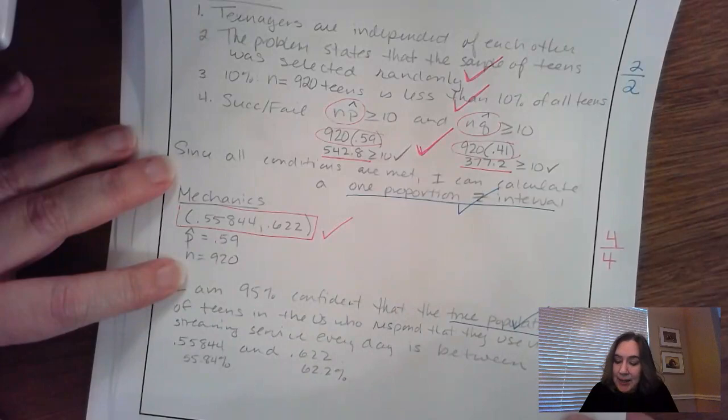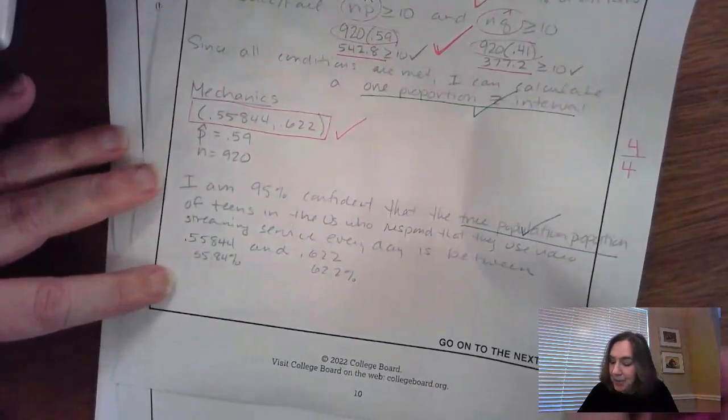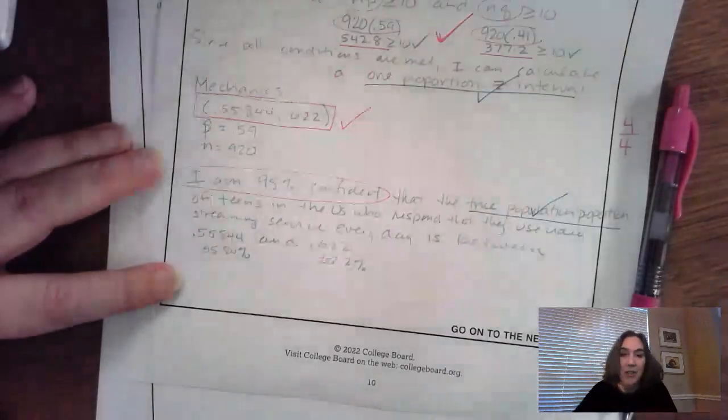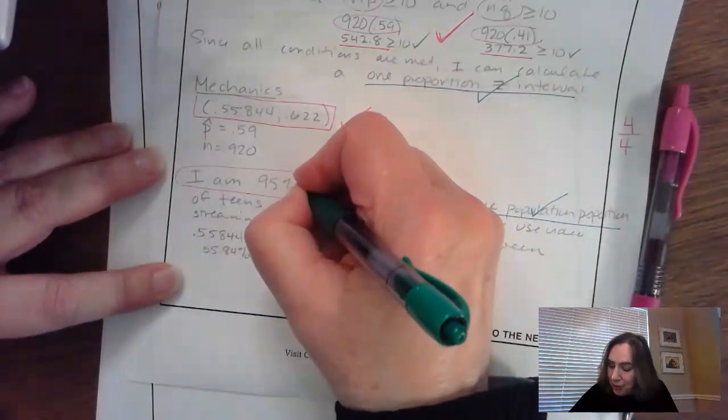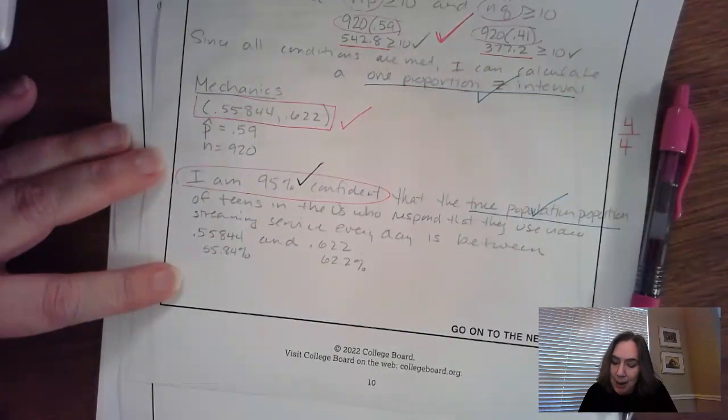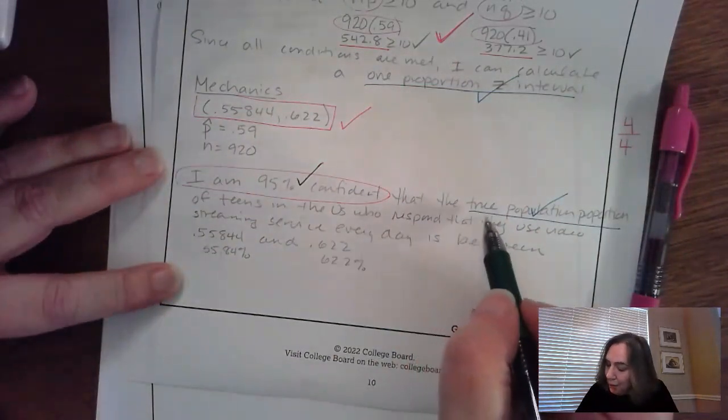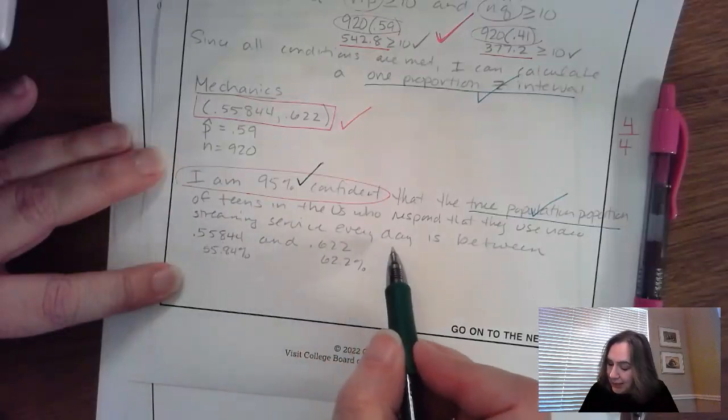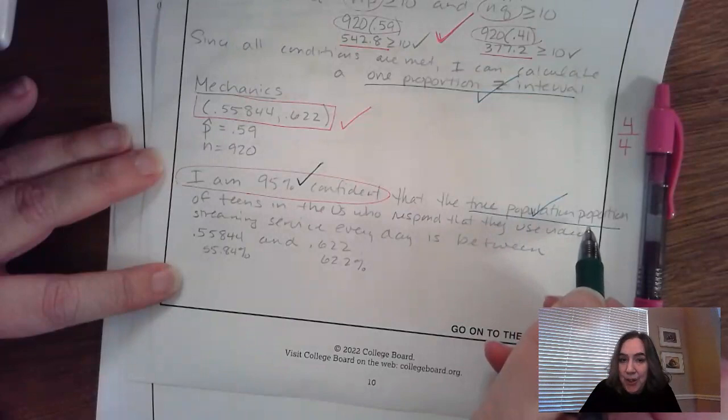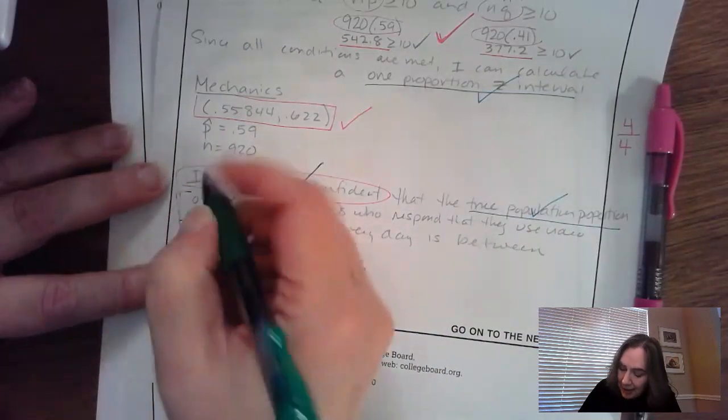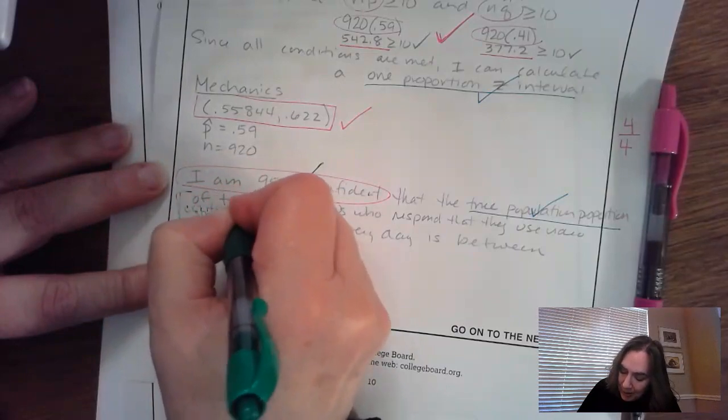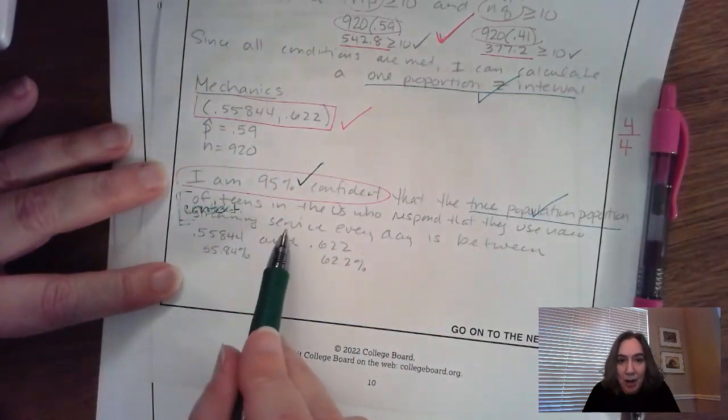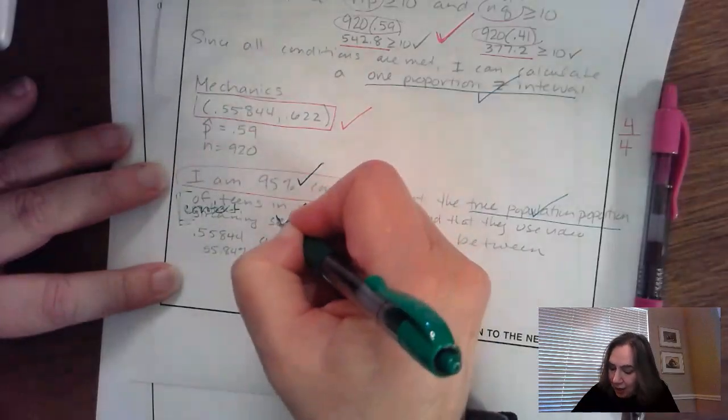So now we're moving on to section number three. Section number three is all about the interpretation. And so the interpretation, did you say that you are 95% confident? I'm going to change color here. If you did, that is going to be your first check mark, reflecting the confidence level that you were told to use. Did you include the true population proportion of teens in the US who respond that they use video streaming service every day? So that means it has to have true population proportion again. And then that means they also need to make sure that they have context right here.